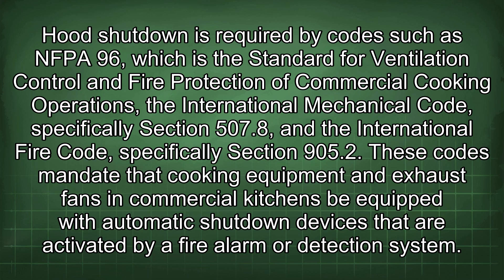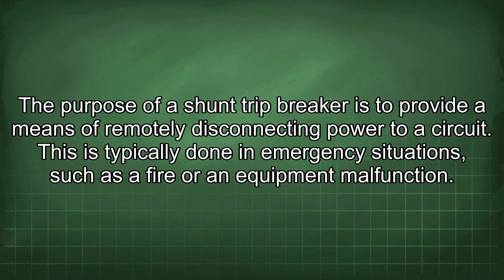These codes mandate that cooking equipment and exhaust fans in commercial kitchens be equipped with automatic shutdown devices that are activated by a fire alarm or detection system. The purpose of a shunt trip breaker is to provide a means of remotely disconnecting power to a circuit.